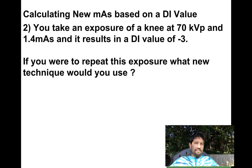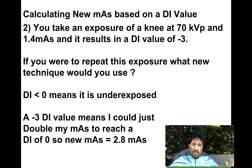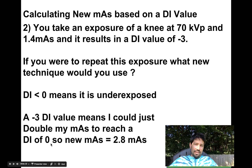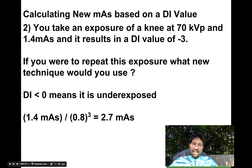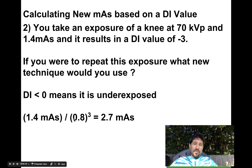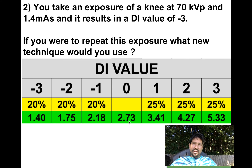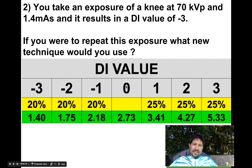Let's try another one. If you take an exposure at 70 kVp and 1.4 mAs and it's a DI of negative 3, it's less than zero, so it's underexposed. Negative 3 means I'm just about half what I should be, so I could skip the fancy math and just double my mAs: 1.4 becomes 2.8, giving a DI of 0. If I wanted to do the fancy math, I'm going down — 20% steps — and I did it 3 times for a DI of negative 3. So I raise 0.8 to the exponent 3. If it were overexposed, I'd raise 1.25 to the DI value. So 1.4 divided by 0.8 cubed is 2.7 mAs. The checker confirms: a DI of negative 3 at 1.4 mAs corresponds to a DI of 0 at 2.7 mAs.